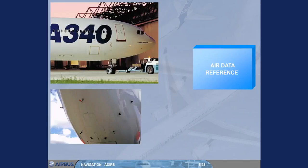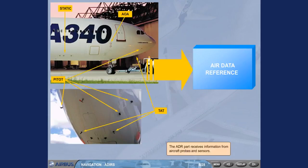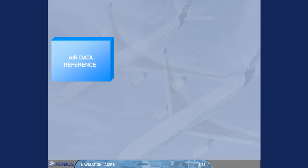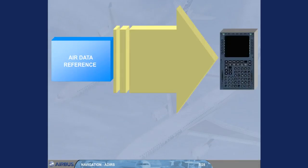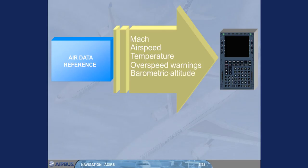The ADR part receives information from aircraft probes and sensors. It provides various items of air data to the Flight Management and Guidance Computers, FMGC, and other users. The air data provided includes Mach, Airspeed, Temperature, Overspeed Warnings, Barometric Altitude, and Angle of Attack.